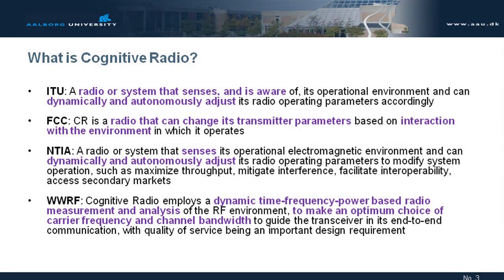So, first of all, what is cognitive radio? A lot of people try to give a definition of it. I selected definitions from ITU, FCC, and other regulatory and industrial forums. They describe radio systems that sense, are aware, dynamically and autonomously adjust, can change transmitter parameters, and interact with the environment. More or less, all of them have something in common.